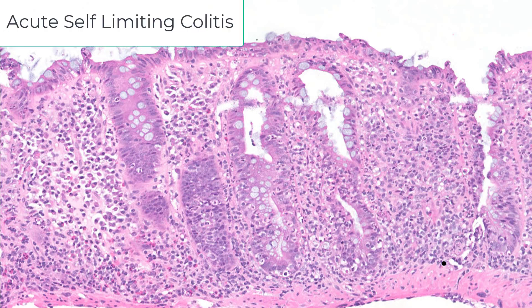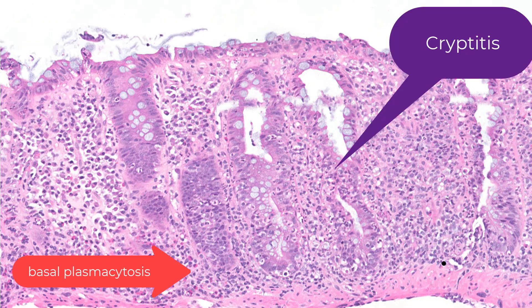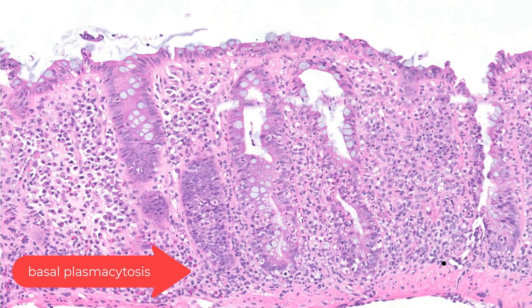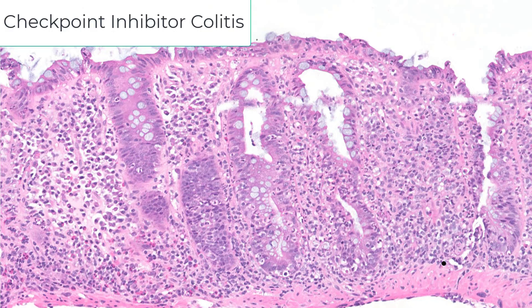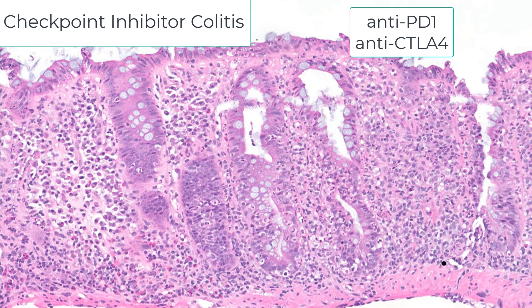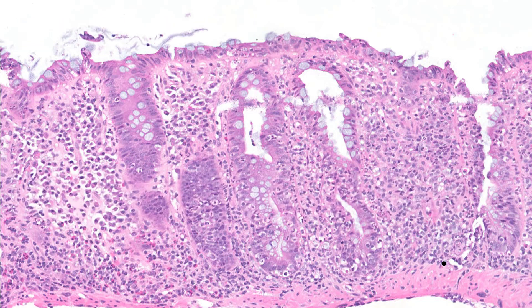This is not chronic colitis; I would classify this as acute self-limiting colitis. Although there is some basal plasmacytosis, the crypt architecture seems largely intact. This is not infectious colitis — this patient was on a checkpoint inhibitor. Generally, patients on any checkpoint inhibitor including PD-1 inhibitors tend not to show a chronic colitis pattern in our experience, though others have reported chronic colitis with PD-1 inhibitors.